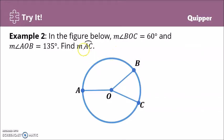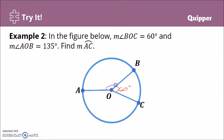Example number two: in the figure below, the measure of angle BOC equals 60 degrees, so this angle is 60 degrees. And the measure of angle AOB equals 135 degrees, so this one is angle AOB, which is 135 degrees.